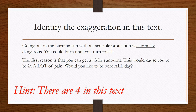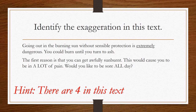Now that we know a little bit more about exaggeration and have seen some examples, let's have a go at identifying the exaggeration in this text: 'Going out in the burning sun without sensible protection is extremely dangerous. You could burn until you turn to ash. The first reason is that you could get awfully sunburnt. This would cause you to be in a lot of pain. Would you like to be sore all day?' The hint for this task is that there are four. Pause the video and see if you can identify the four parts of this text that have been exaggerated.